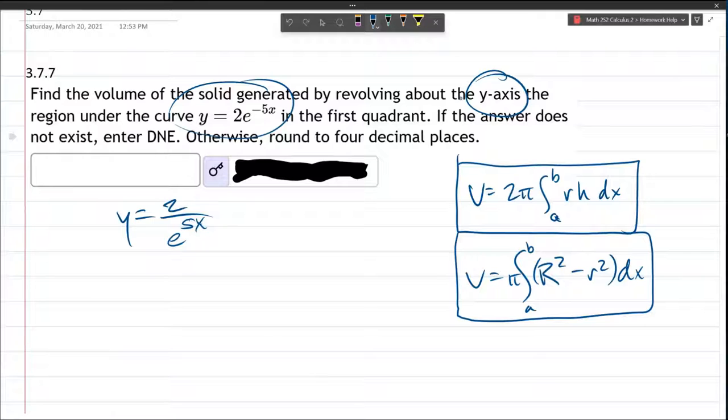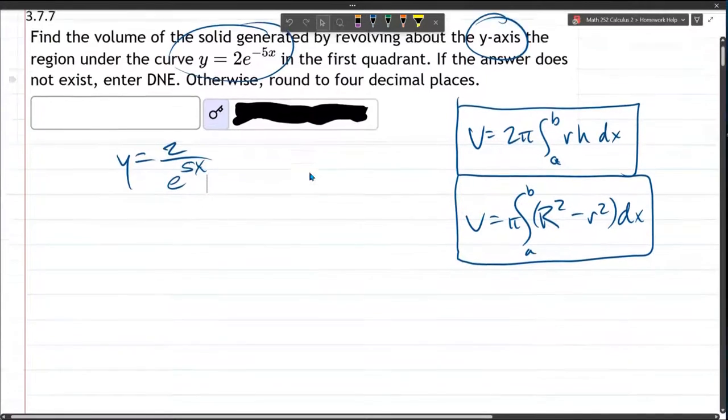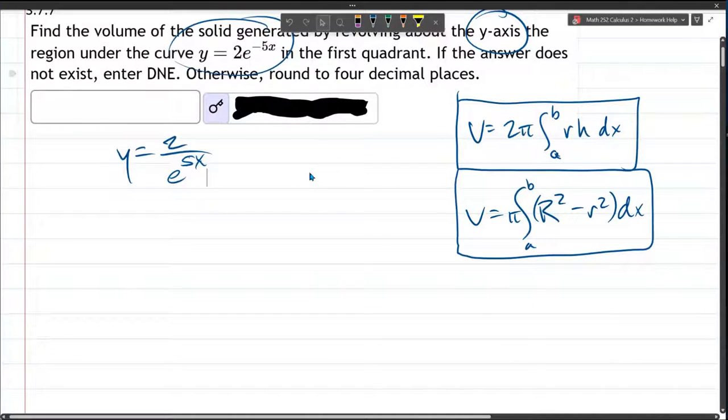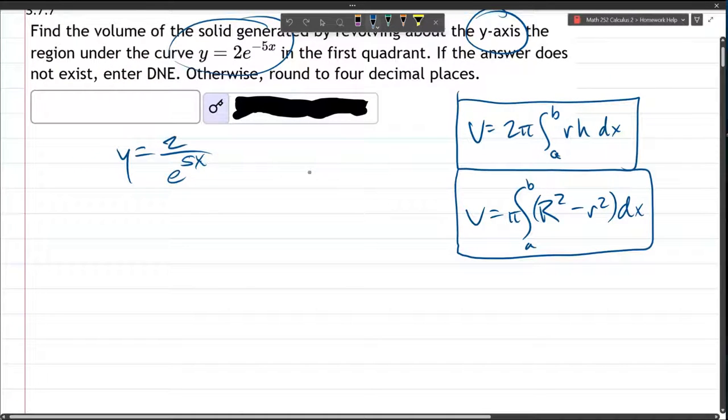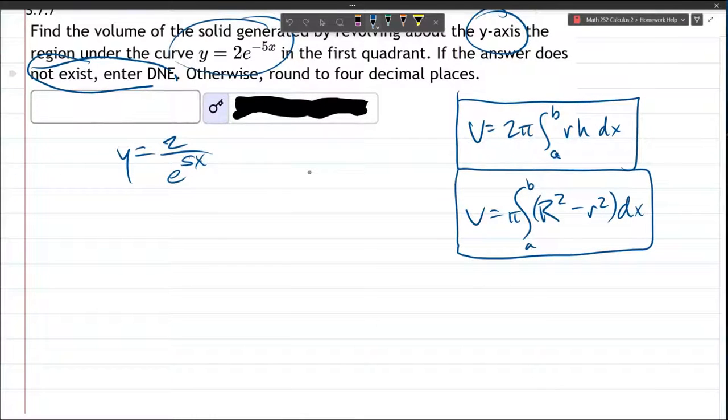This is important because this function we're integrating in the first quadrant, and this function does go on forever, so this is an improper integral, and it's important that this y value gets smaller and smaller, or else it will be an infinite area. And that would be does not exist, if that occurred.